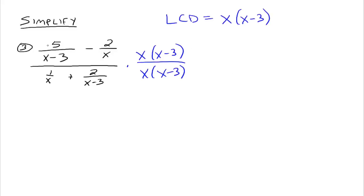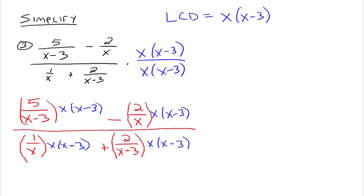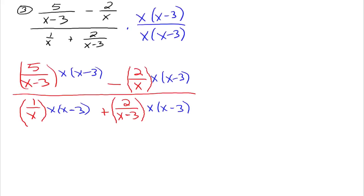We have 5 over x minus 3 times x times x minus 3, distributing that through the numerator and denominator of the bigger fraction. So what happens to 5 over x minus 3 times x times x minus 3? The x minus 3's divide out, and we're just left with 5x.